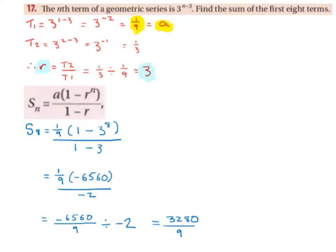Term 1 is 3 to the power of 1 minus 3, swapping that n for a 1. 1 minus 3 is minus 2, so we get 3 to the power of minus 2, which gives us 1 over 9. So a is 1 over 9, the first term.